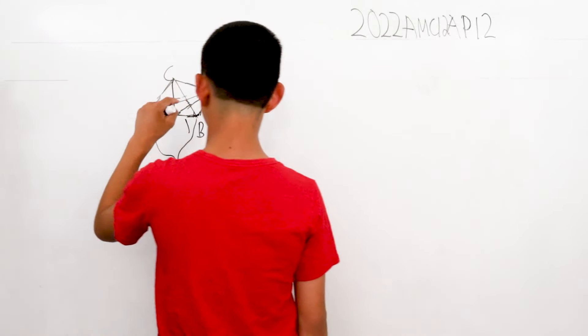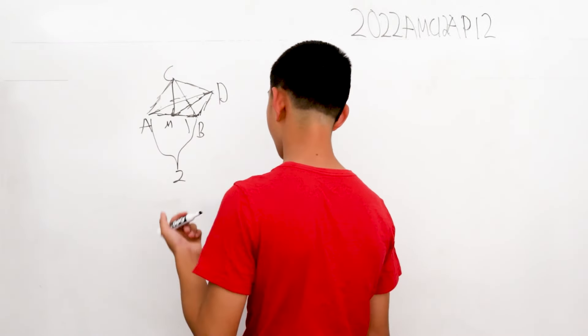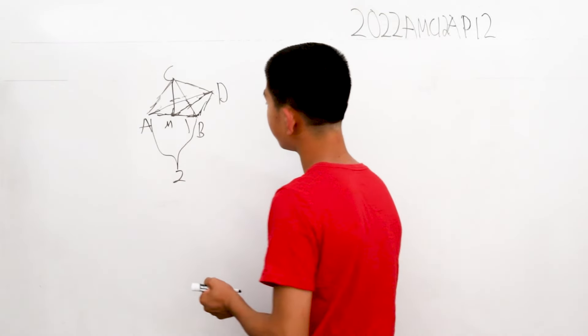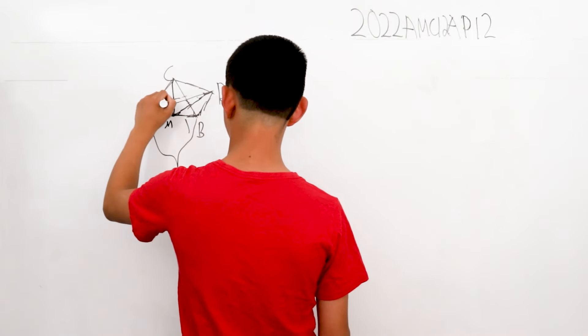So, this length is one, the MC length is the hypotenuse, and by trigonometric rules, we know that this is equal to the square root of three.